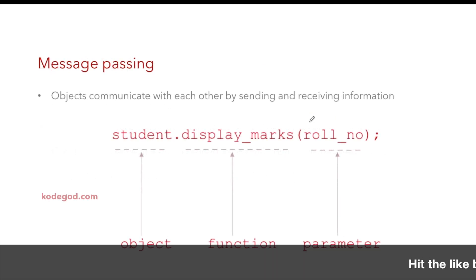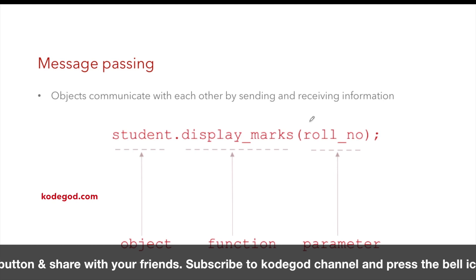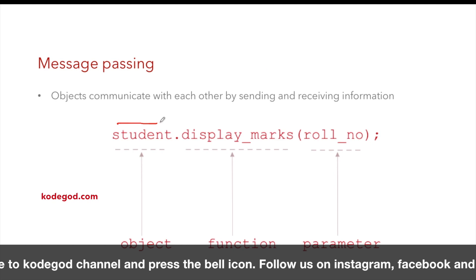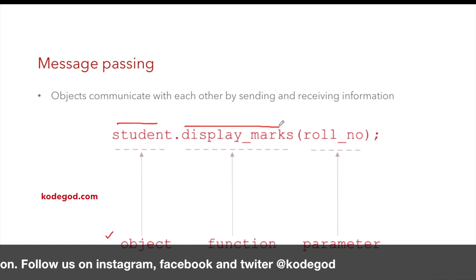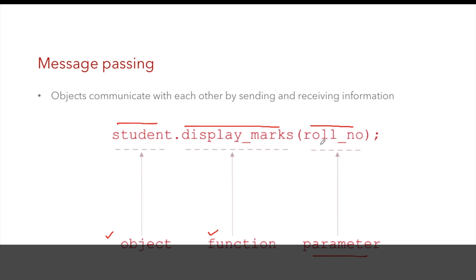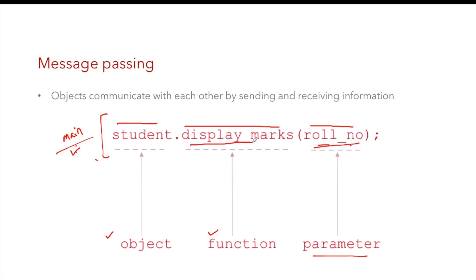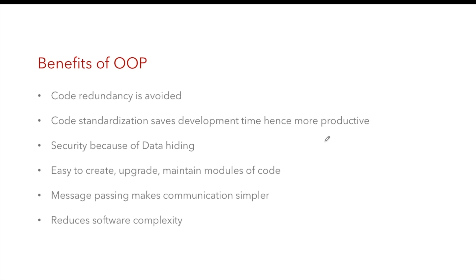In object oriented programming, objects communicate with each other by sending or receiving information using parameters — this is message passing. For example, if Student is an object, display_marks is a function, and roll_number is a parameter, then the calling function sends this parameter and the called function receives it. This is how message passing plays a critical role in OOP.